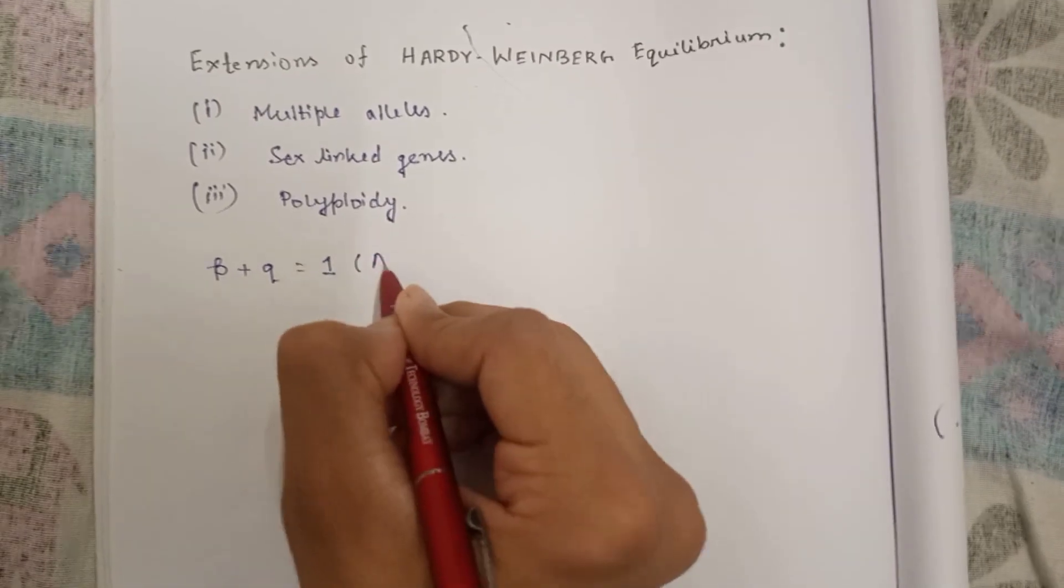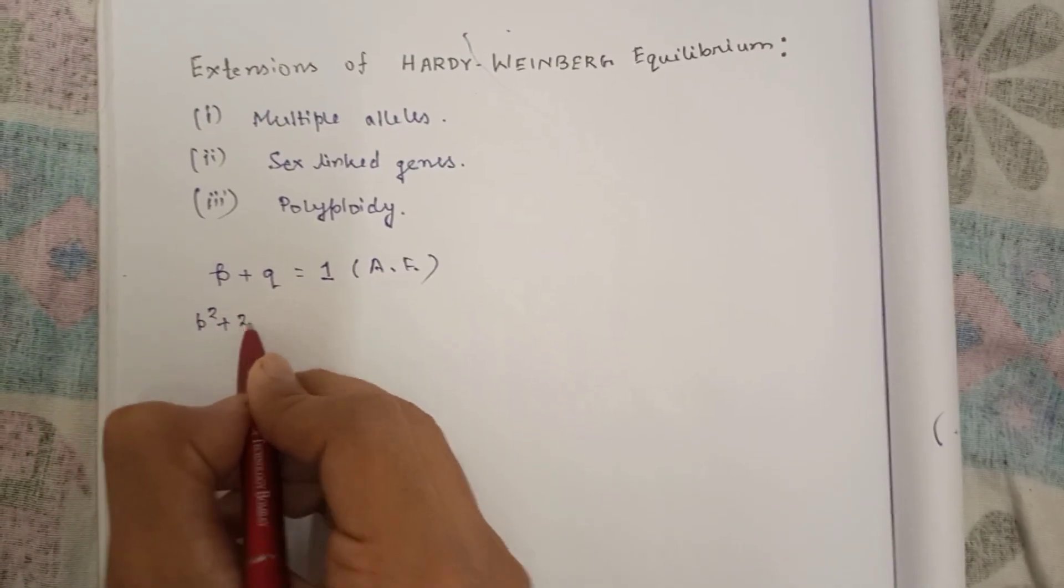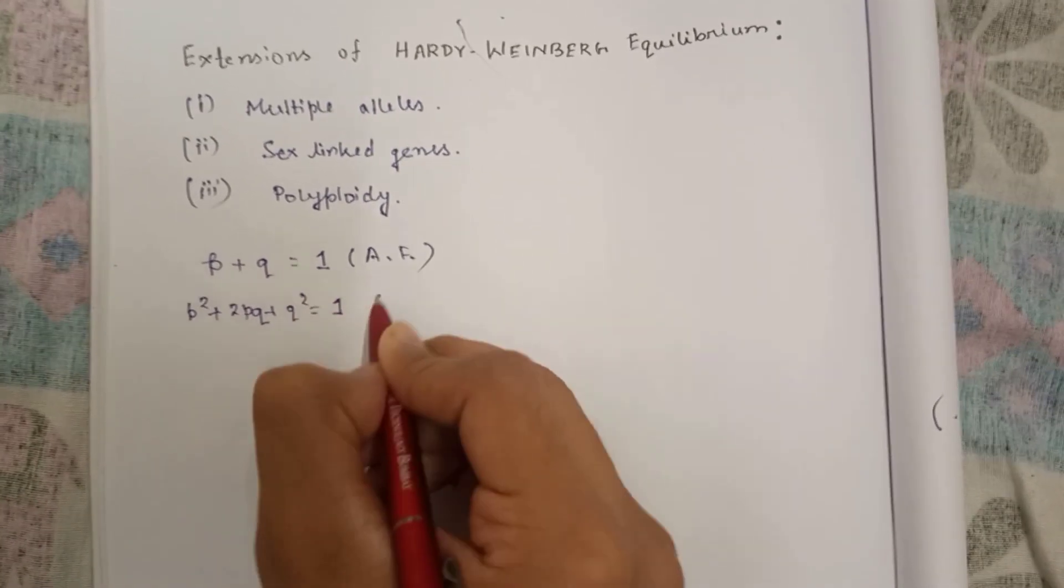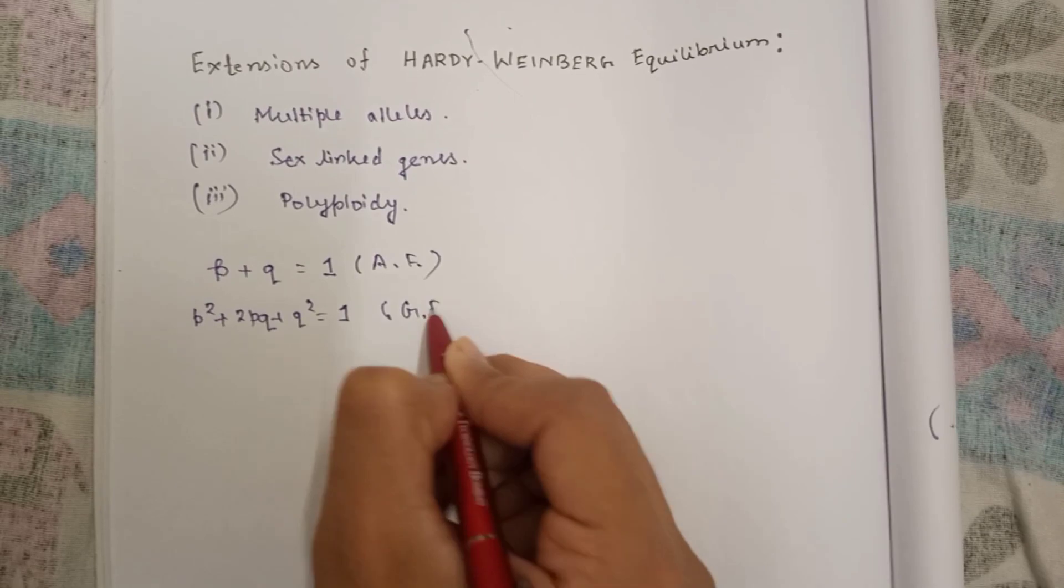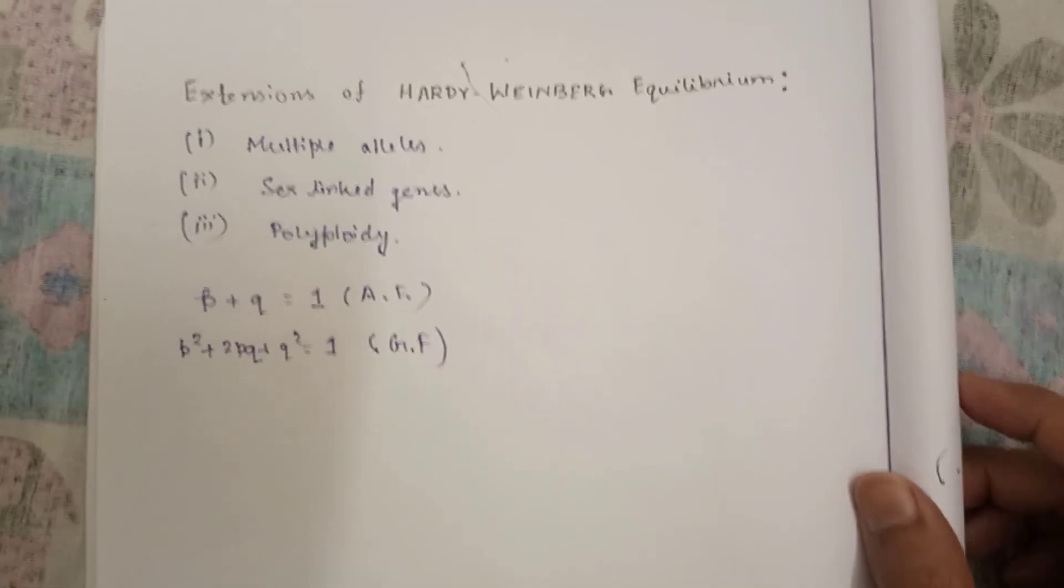And p square plus 2pq plus q square equal to one, that is genotypic frequency. This was the sole idea of Hardy-Weinberg equilibrium.